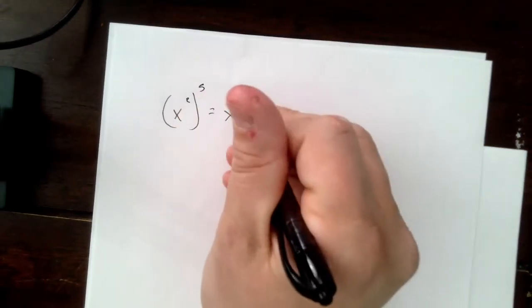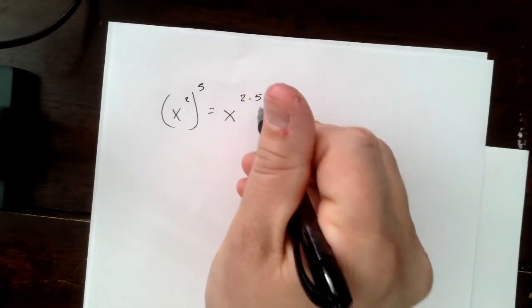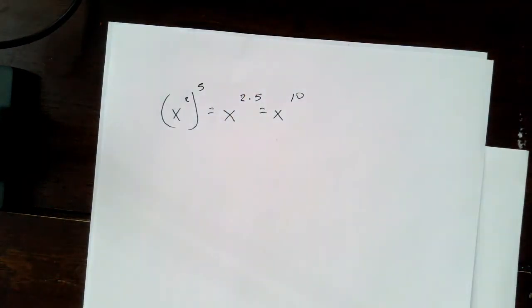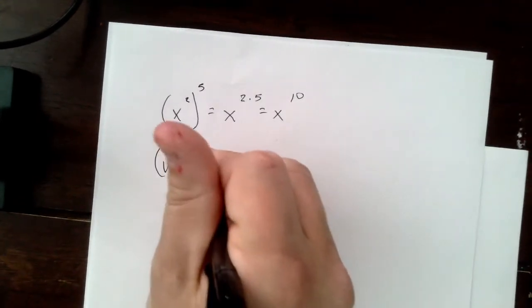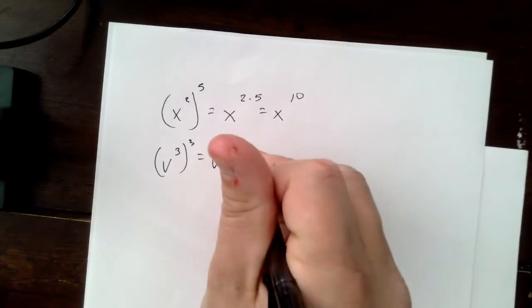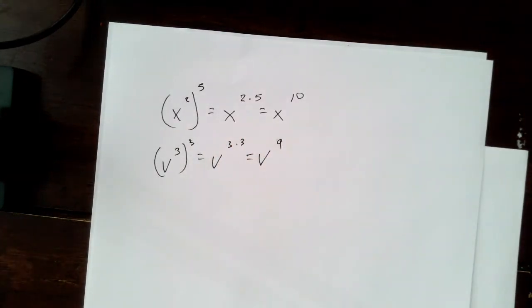Let's start off at the very beginning. If we have x squared raised to the fifth, that's the same thing as saying x squared times five, which is x to the tenth. You're going to multiply the exponents together if it's a power raised to a power. Same thing: if we have v to the cubed raised to the third, that's v to the three times three, which is v to the ninth.